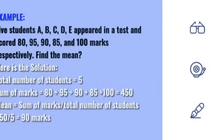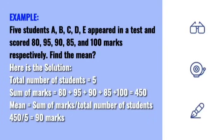Example. 5 students A, B, C, D, E appeared in a test and scored 80, 95, 90, 85, and 100 marks respectively. Find the mean? Here's the solution. Total number of students equals 5. Sum of marks equals 80 plus 95 plus 90 plus 85 plus 100 equals 450. Mean equals sum of marks slash total number of students. 450 slash 5 equals 90 marks.